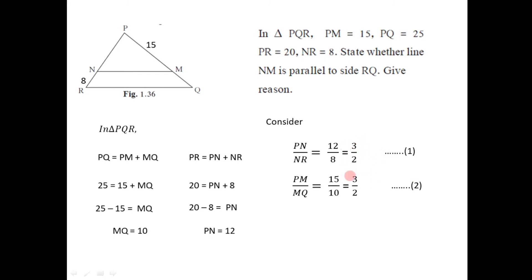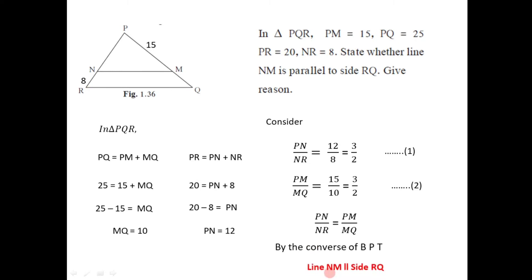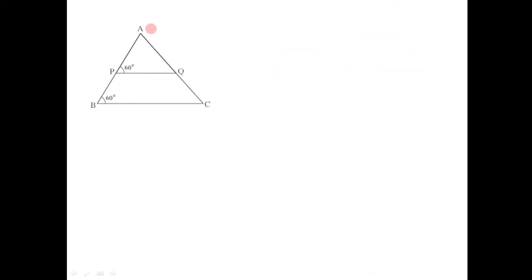Comparing both equations, the right-hand sides are both 3 by 2, so from equations 1 and 2, PN divided by NR equals PM divided by MQ. Since segment NM divides sides PR and PQ of triangle PQR in proportion, by the converse of the basic proportionality theorem, segment NM must be parallel to the third remaining side RQ. Therefore, NM is parallel to side RQ.